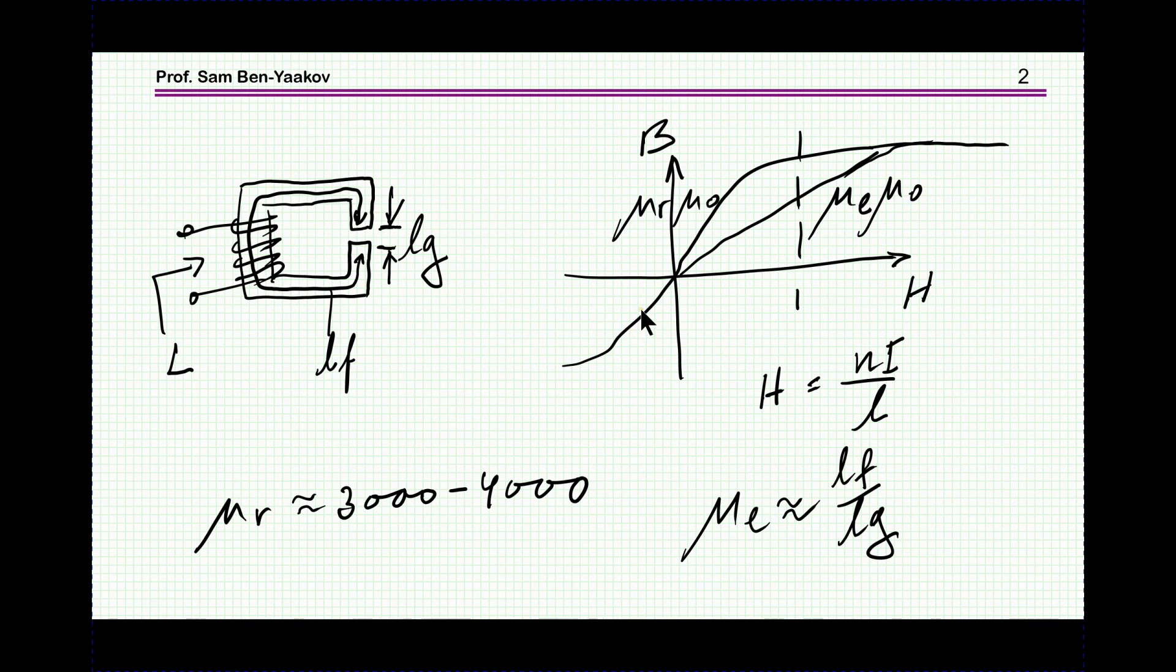So this is the intuitive explanation why we need a gap and we can show that total relative permeability is about the ratio between the magnetic path length within the core and LG.